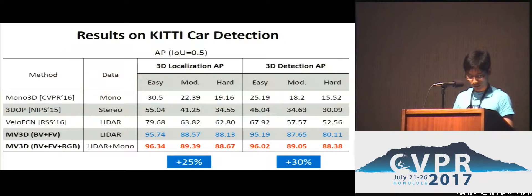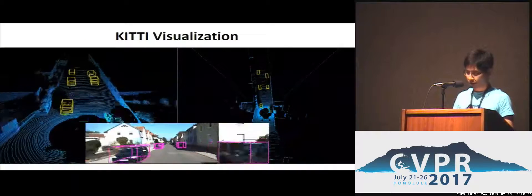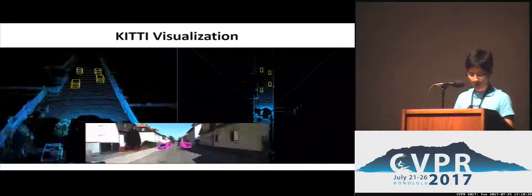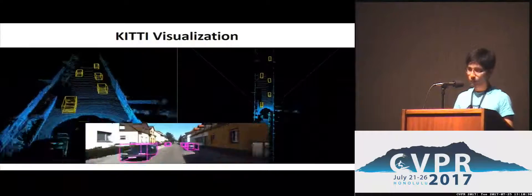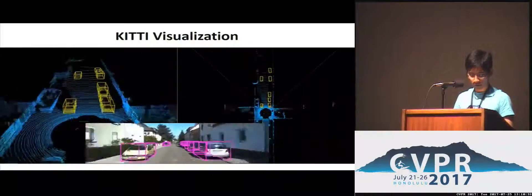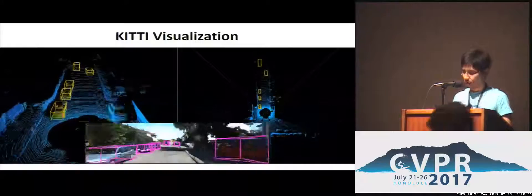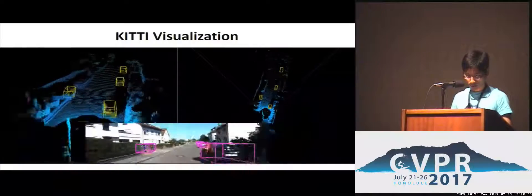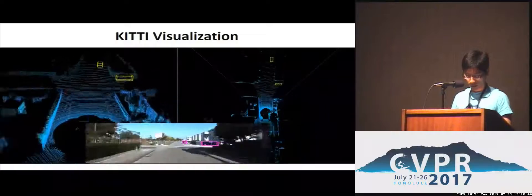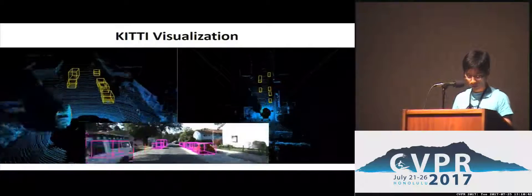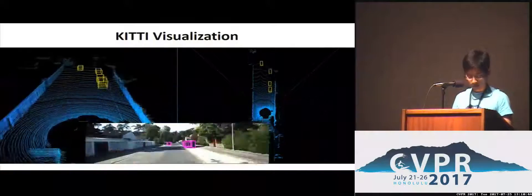Here are the results on the KITTI benchmark. Our method outperforms previous methods by 25% on 3D localization and 30% on 3D detection. We visualize 3D detection results on the KITTI dataset, showing the detected 3D bounding boxes in the point cloud and in the image. On the right is the detection shown from the bird's eye view. Our method predicts 3D locations, size, and orientations of objects in the 3D scene with very high accuracy.